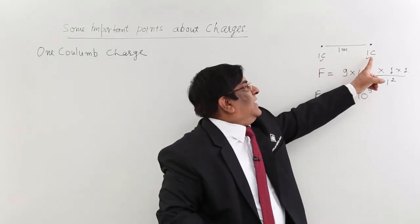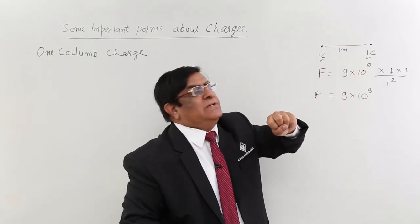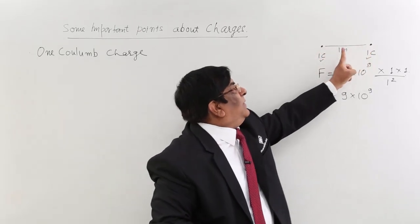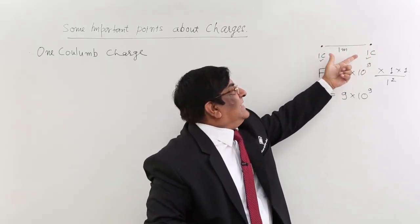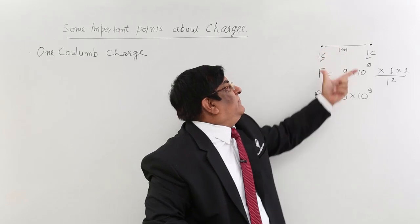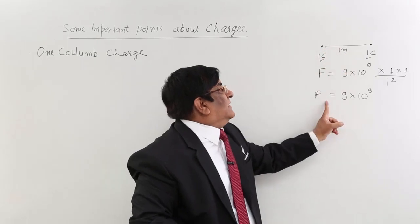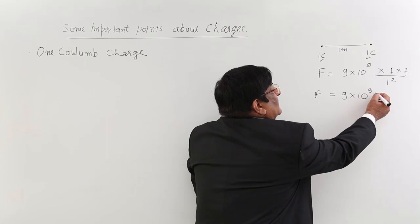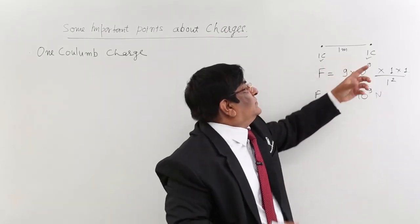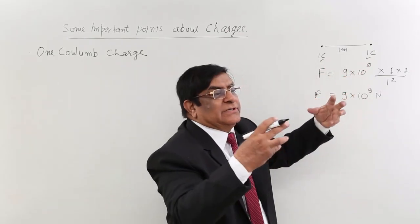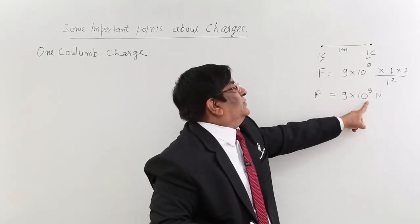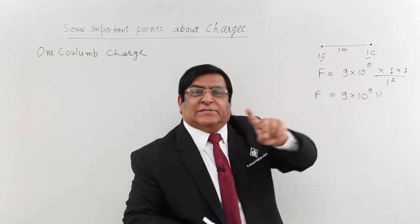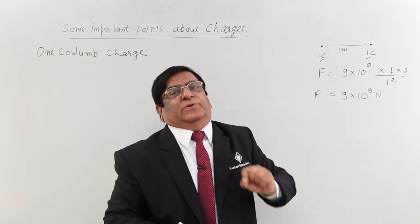One coulomb charge is so much charge that if it is given to two particles placed at 1 meter distance, then the force developed between the two particles should be 9 × 10⁹ Newton. The quantity of charge must be large enough for the force to reach this level; then we say that quantity is 1 coulomb.